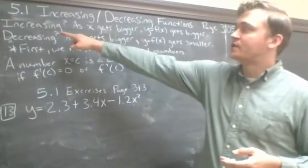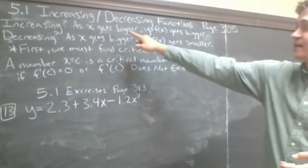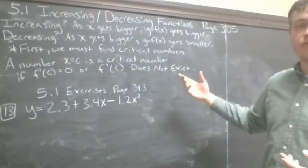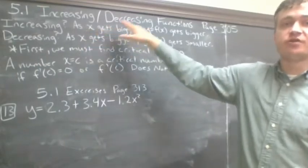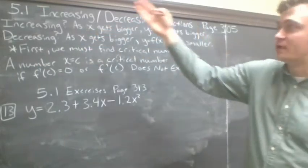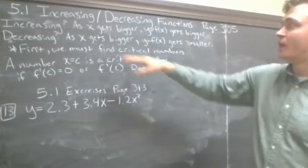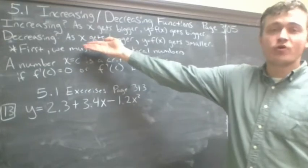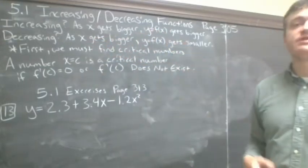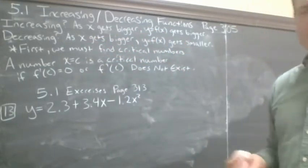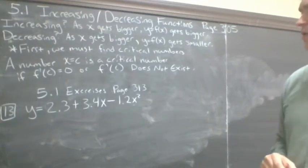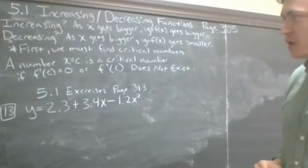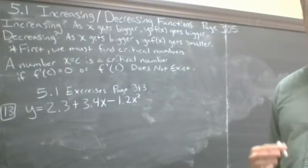In short, when is a function increasing? Well, as X gets bigger, our function gets bigger. The Y coordinates are going to get larger. So as the X coordinates get larger, the Y coordinates get larger. When is a function decreasing? Well, as X gets larger, the function gets smaller. In other words, as the X coordinates get bigger, the Y coordinates get smaller. Graphically, we could visualize that as well — one of the numbers getting bigger, one getting smaller in terms of F of X.